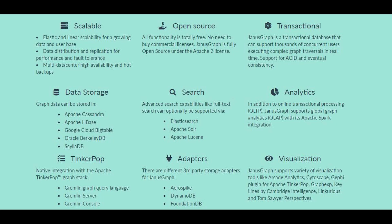JanusGraph is open source — you don't need a commercial license — and is supported under Apache 2. Its internal architecture uses Apache TinkerPop as its native integration engine, similar to how Java and Python use OOP concepts. TinkerPop is also used by other graph databases like Neo4j. All the features and properties of TinkerPop are available in JanusGraph as well.